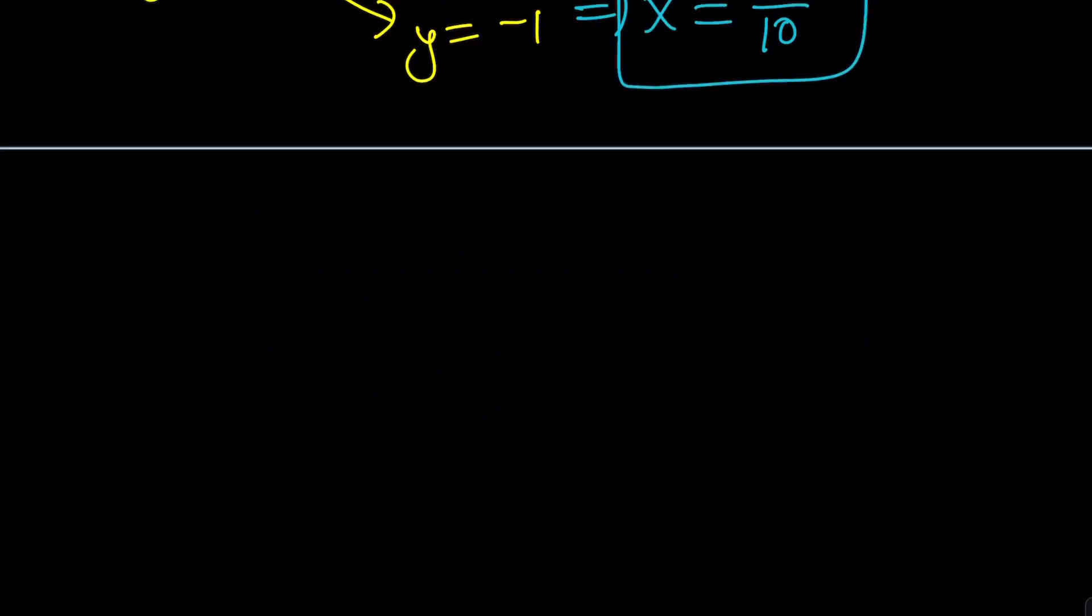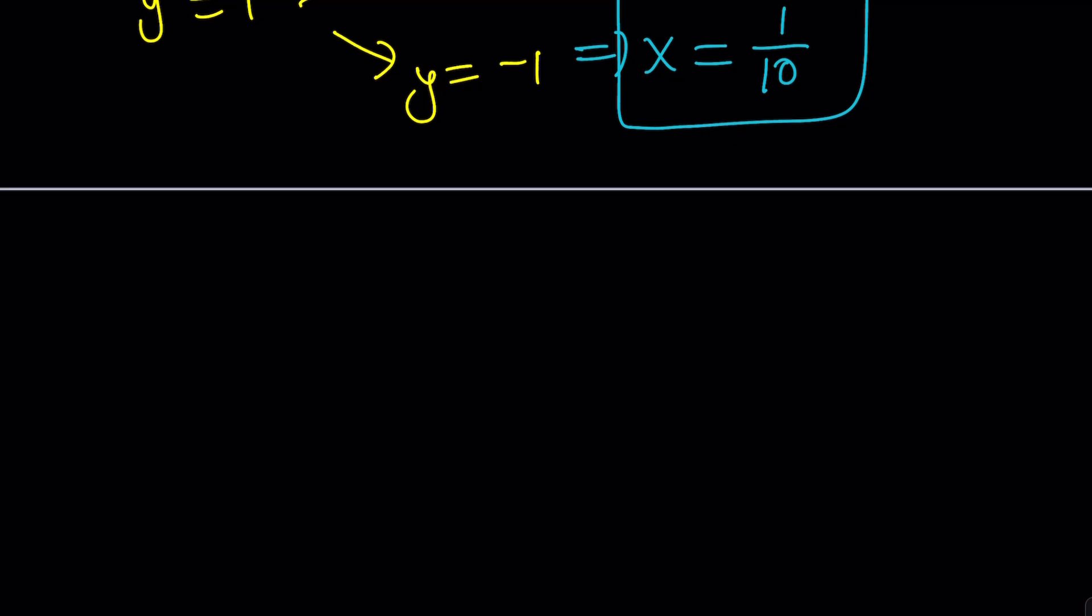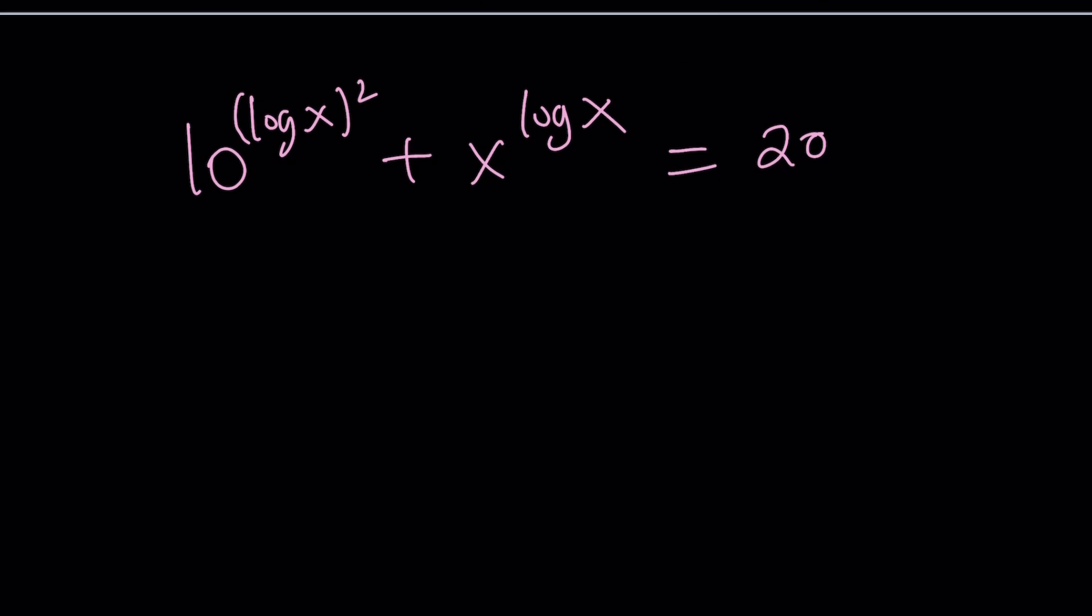Now, let's go ahead and approach this expression from a different angle. So, we have 10 to the power log x squared and x to the power log x. Now, I want to show that these two expressions are actually equal. How could I do that differently? So, here's what I can do, a property that is very helpful.